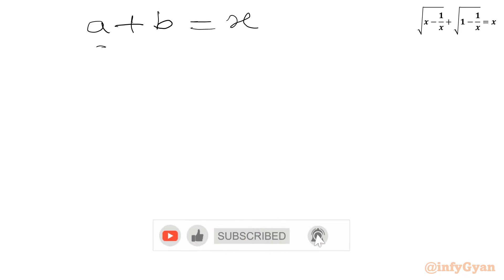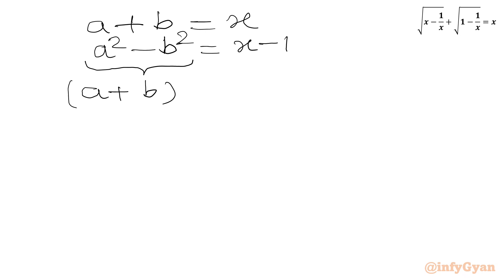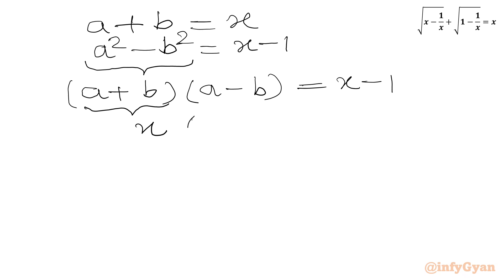Let me write our equations here. We have a plus b equal to x, and a squared minus b squared equal to x minus 1. Now we can apply the difference of two squares formula: a plus b times a minus b equals x minus 1. Since a plus b equals x, we can substitute and write x times (a minus b) equal to x minus 1.